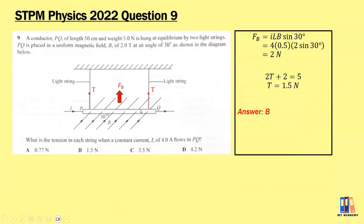Moving on to past year 2022 question 9: a conductor PQ of length 50 cm and weight 5 N is hung at equilibrium by two light strings, placed in a uniform magnetic field of 2 Tesla at an angle of 30 degrees. When a constant current of 4 amperes flows in PQ, using F equals ILB sin theta, the force is 2 N in the upward direction by Fleming's left-hand rule. With two tensions and the magnetic force upward, and weight downward: 2T plus 2 equals 5, so tension in each string is 1.5 N. Answer is B.